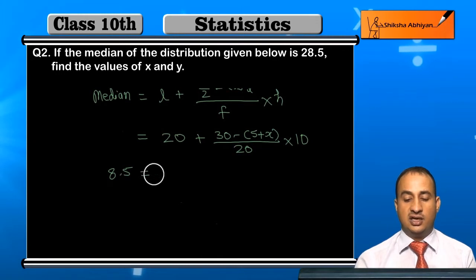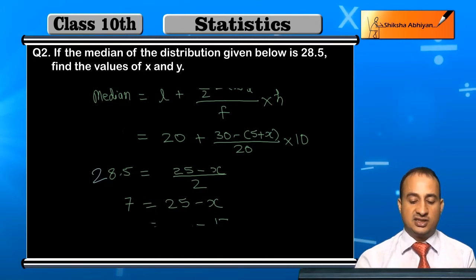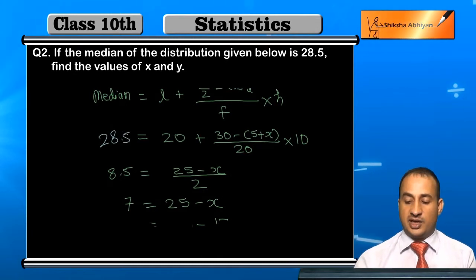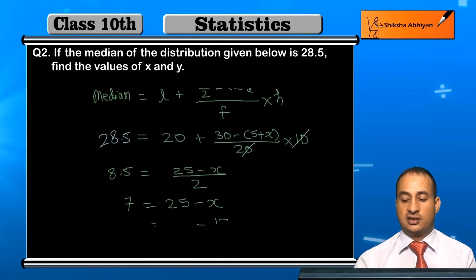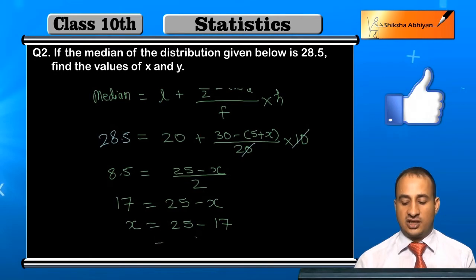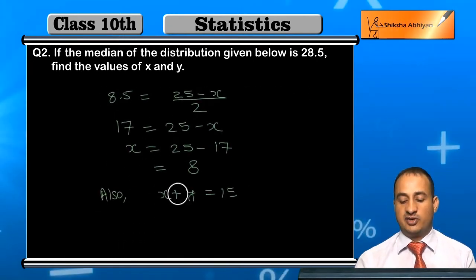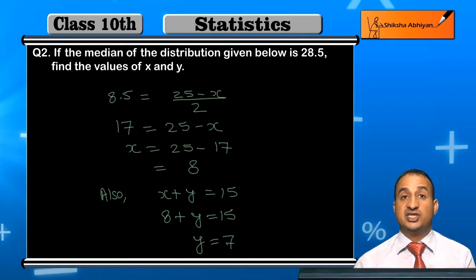The median is 28.5. Applying the formula: 28.5 = 20 + ((30 - (5+x)) / 20) × 10. Subtracting 20 from both sides gives 8.5. After simplification, 2 × 8.5 = 17 = 25 - x, so x = 25 - 17 = 8. From Equation 1, x + y = 15, substituting x = 8 gives y = 7. So x = 8 and y = 7 are the missing frequencies.